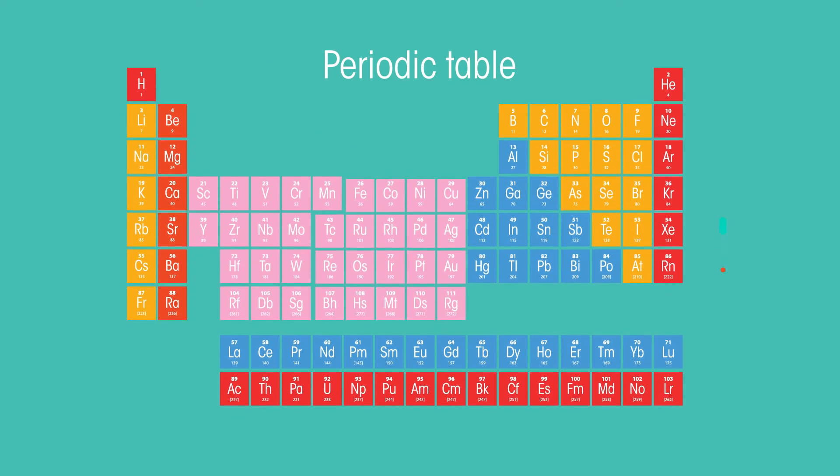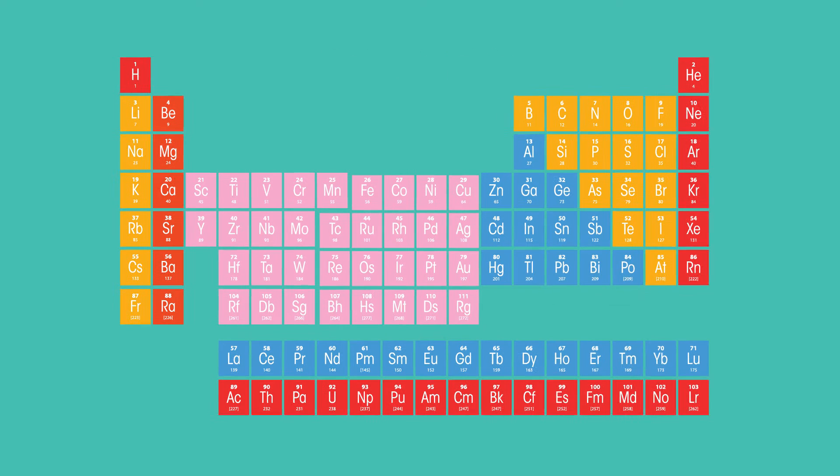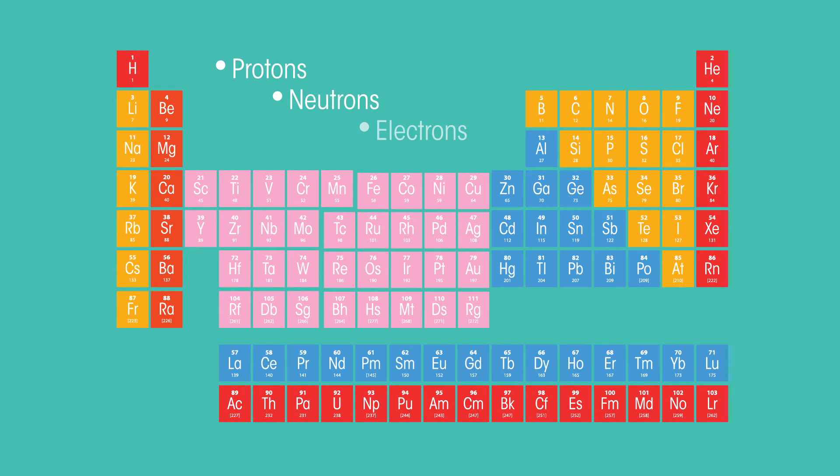We can use the periodic table to tell us more about the differences between elements, including the different numbers of protons, neutrons and electrons they possess. In this video you will also learn what ions and isotopes are, just stay tuned.